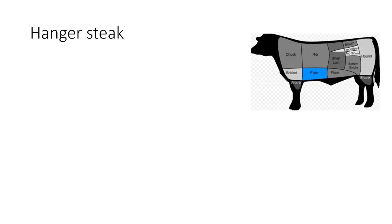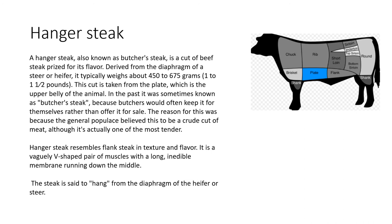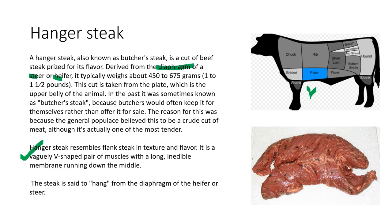Hanger steak is also from the plate and is taken from the diaphragm of the animal — it is a V-shaped set of muscles hanging just below. It is a very tender steak, which is why butchers would often keep it for themselves rather than put it on sale. There is only one hanger steak per animal.